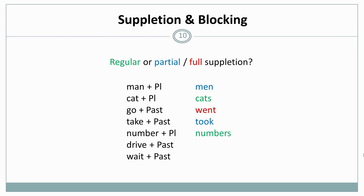The plural of number is numbers. This is regular. The past tense of drive is drove, partial suppletion. And finally, we have the past tense of wait, which is waited, the normal regular form.